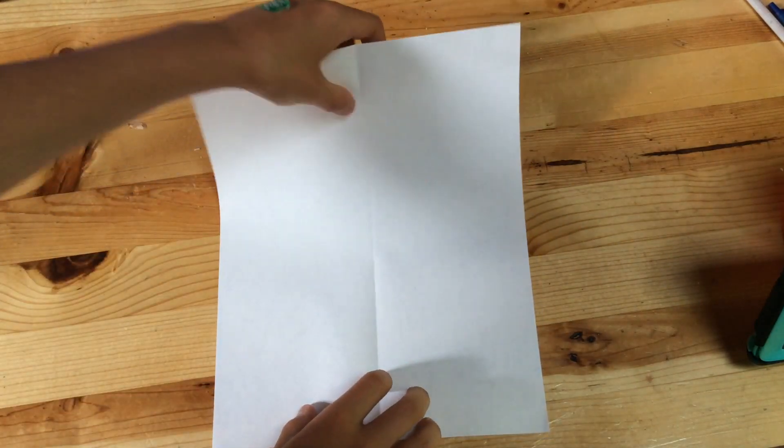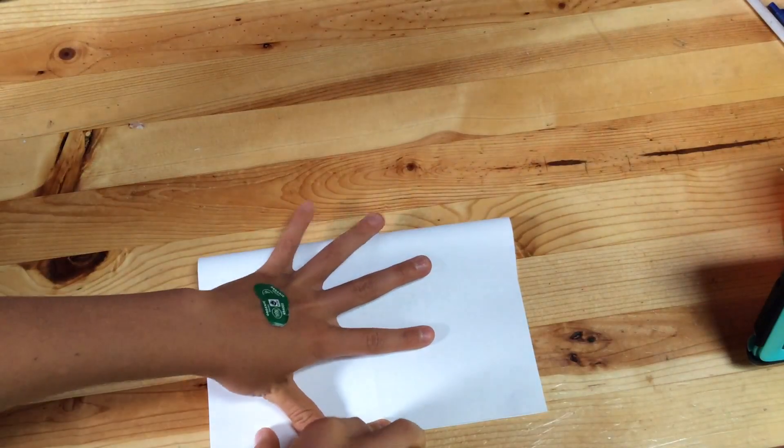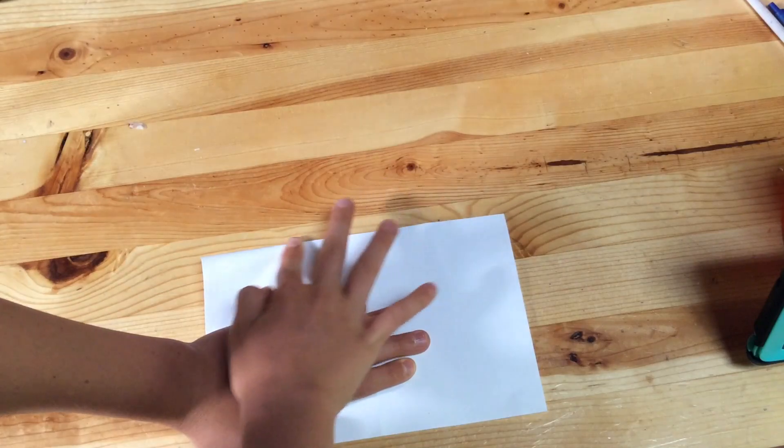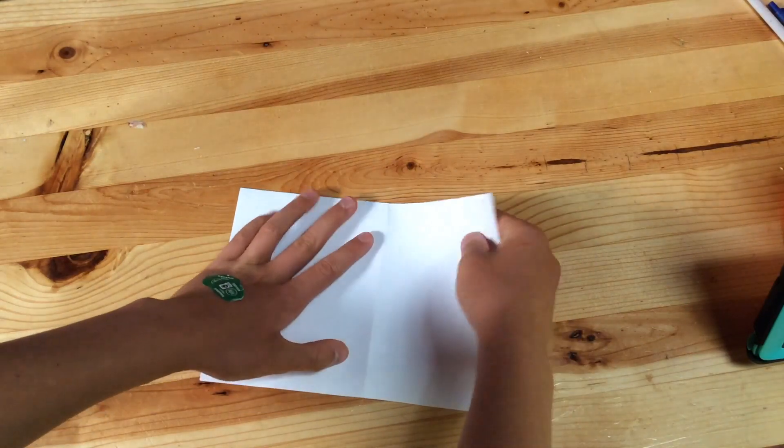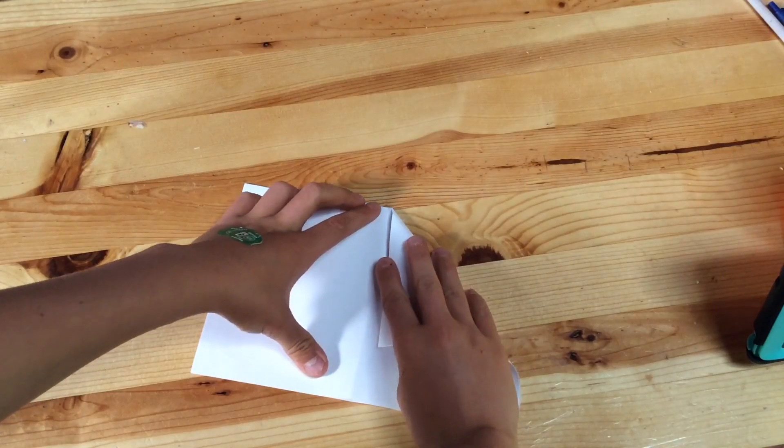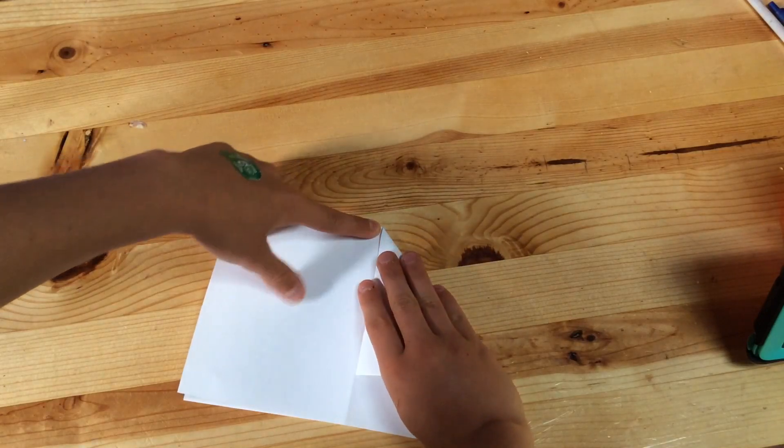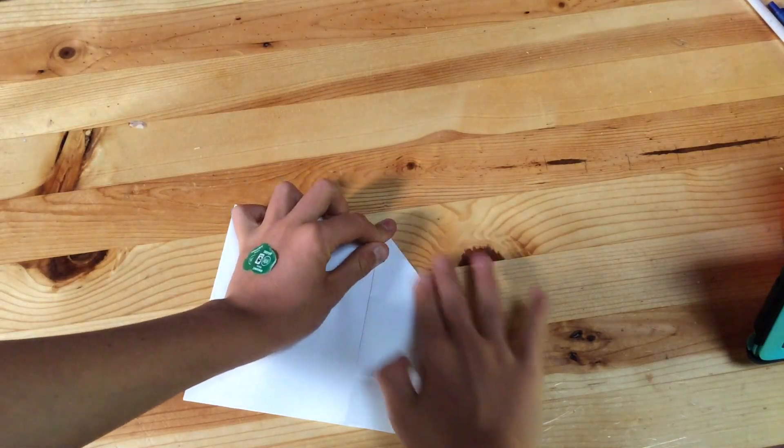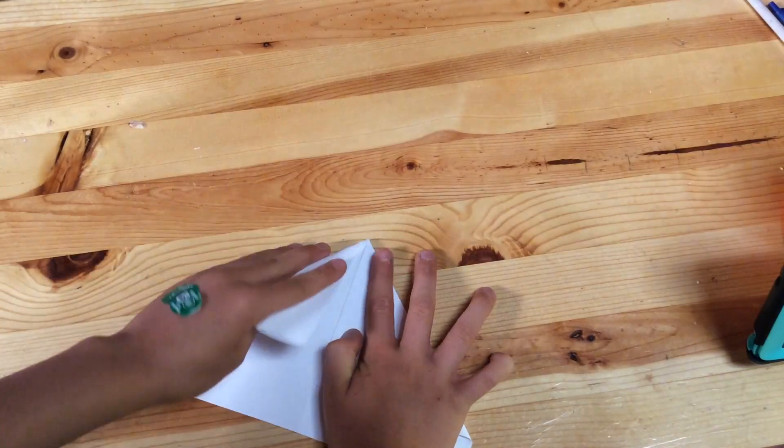And now you fold it down just like this. And now you will fold this corner until you see the crease right here, until it's right there. Just fold it so that this edge is on the crease, also known as the guideline.